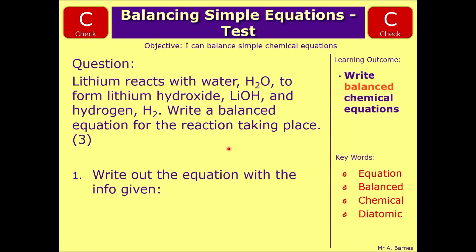Okay, you should have had a go at the question so let's go through. So number one, write out the equation with the info given. So we know we've got lithium which in the periodic table is Li, reacting with water H2O, and it forms lithium hydroxide which is LiOH, so you put an arrow LiOH and hydrogen H2. So that's your starting point.